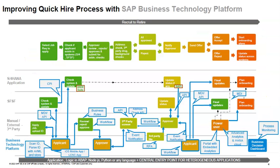Now, this shows improving the quick hire process with SAP Business Technology Platform, where we have application logic in the backend using Node.js, Python, or any other language. We have the Recruit to Retire option here — we are discussing what all can be done within BTP. External third parties can also be involved, and SAP HANA applications can connect with this entire platform. I am taking the example of the Recruit to Retire process.